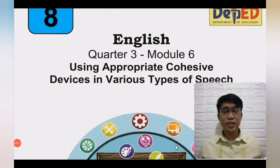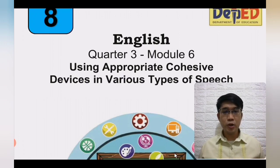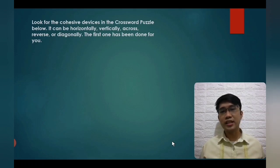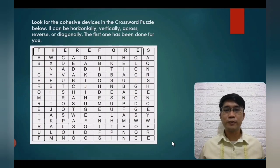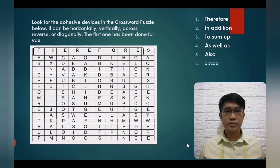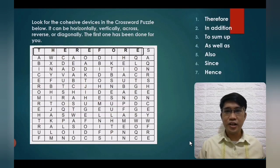Hi guys, this is Sir Janelle, and welcome to our English 8 Quarter 3 Module 6 with the theme: Using Appropriate Cohesive Devices in Various Types of Speech. Look for cohesive devices in the crossword puzzle — they can be found vertically, across, reverse, or diagonally. The first one, 'therefore,' has been done for you. Other cohesive devices include: in addition, to sum up, as well as, also, since, and hence. All of these words are cohesive devices.